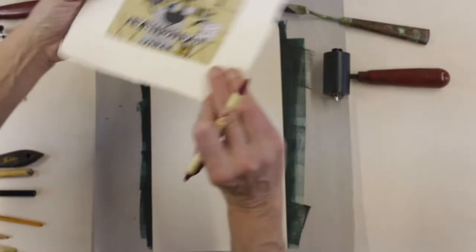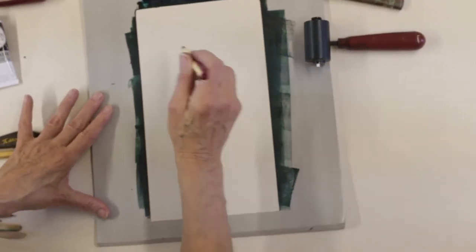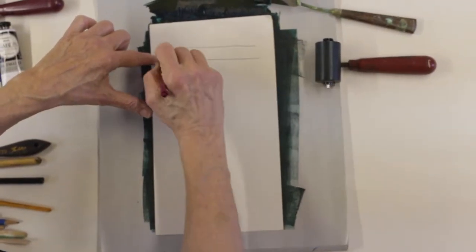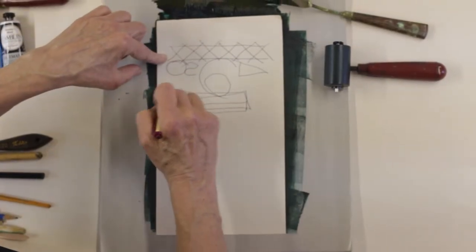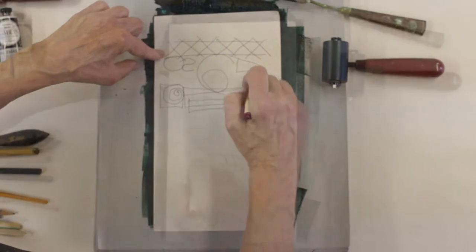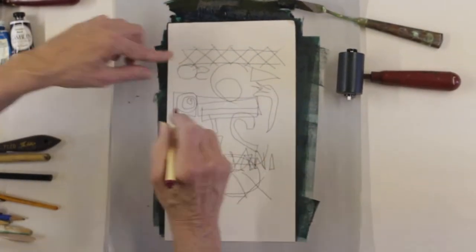Tools to use can be a ballpoint pen, pencil, or a stick. The tool you use should be able to make a strong impression. Your lines will be thick or thin depending upon how hard you press down or how thick or thin the oil paint is underneath.